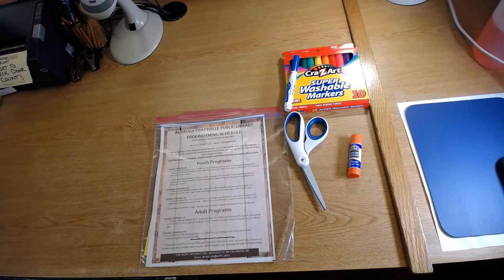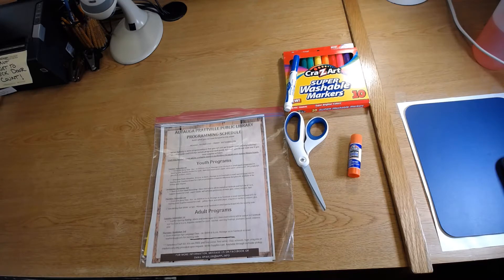All right, it's Miss Rachel back again with the Otago Prattville Public Library. Today we are making the craft for the Thursday, September 3rd story time, which is on Zoom at 9 a.m.